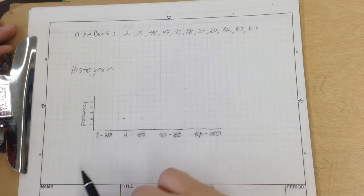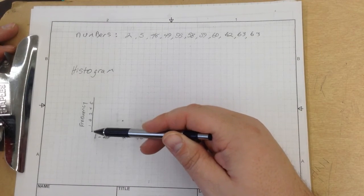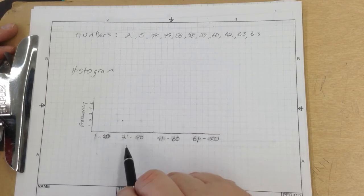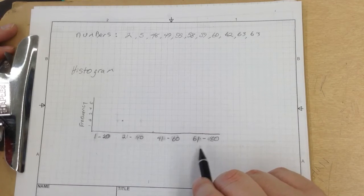Okay, now that you're back with me, we have the frequency of numbers. You can see we've got 1, 2, 3, 4, 5. And down here we have 1 through 20, 21 through 40, 41 through 60, 61 through 80.